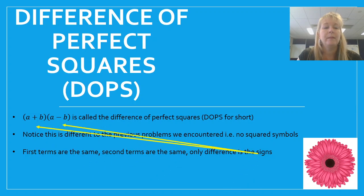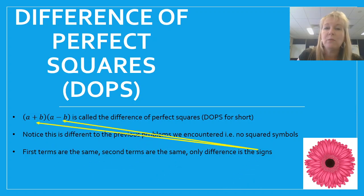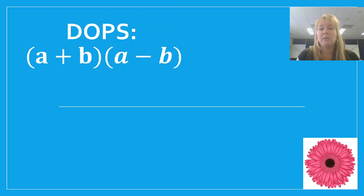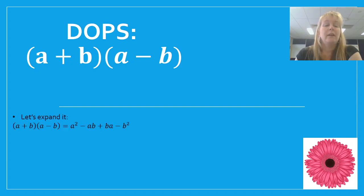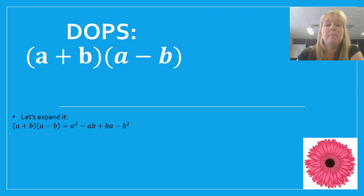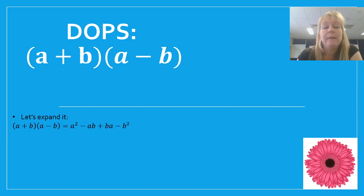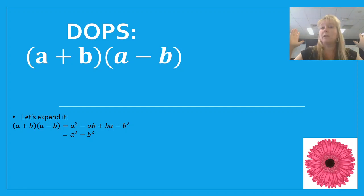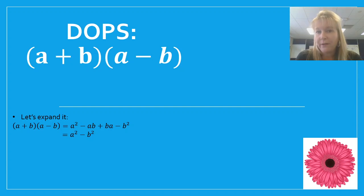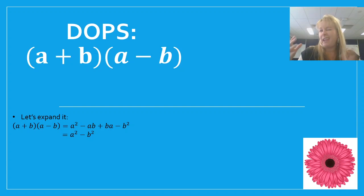Let's expand a plus b times a minus b using FOIL. A times a is a squared. Outsides: a times negative b gives minus ab. Insides: b times a gives plus ba. Last: b times negative b gives minus b squared. Now ab is the same as ba, so looking at those two middle terms — negative ab plus ab — they cancel each other out completely. What we're left with is a squared take away b squared. This is why it's called the difference of perfect squares: a squared is a perfect square, b squared is a perfect square, and the difference is subtraction.